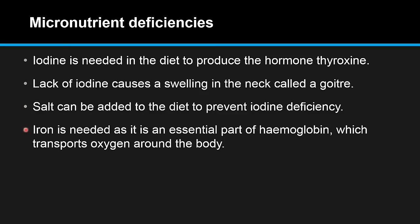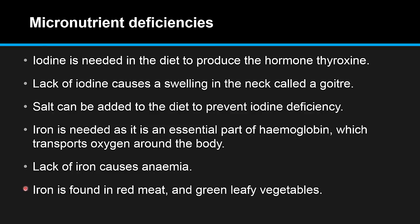Iron is needed as it is an essential part of haemoglobin, which transports oxygen around the body. Lack of iron causes anemia. Iron is found in red meat and green leafy vegetables.